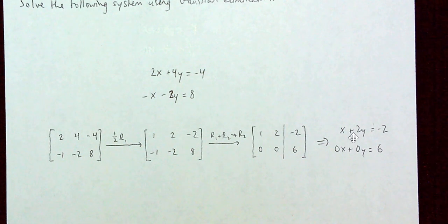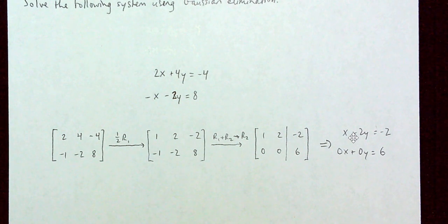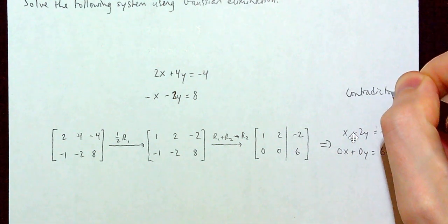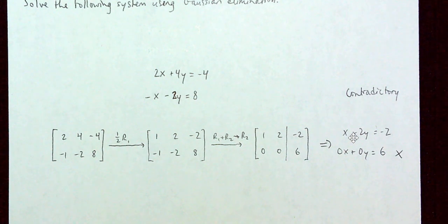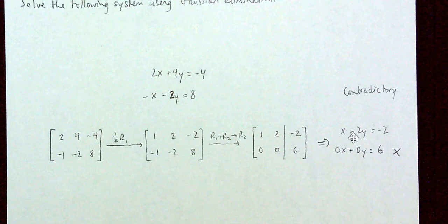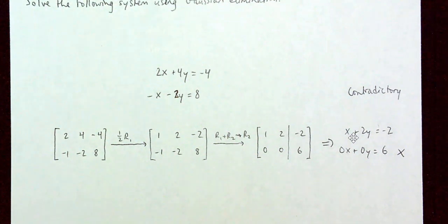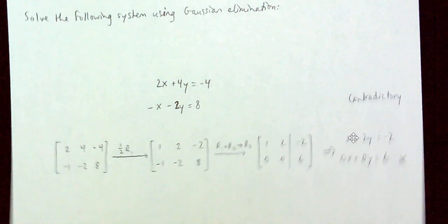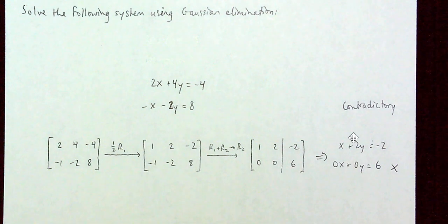Something's not looking right here. Is it possible for 0 times anything plus 0 times anything else to equal 6? No. This is an example of a contradictory or inconsistent system of linear equations. If one of your rows has all zeros except the last entry, then you have an inconsistent system.